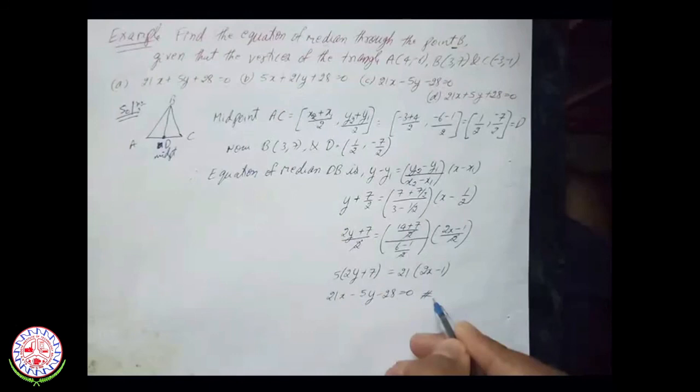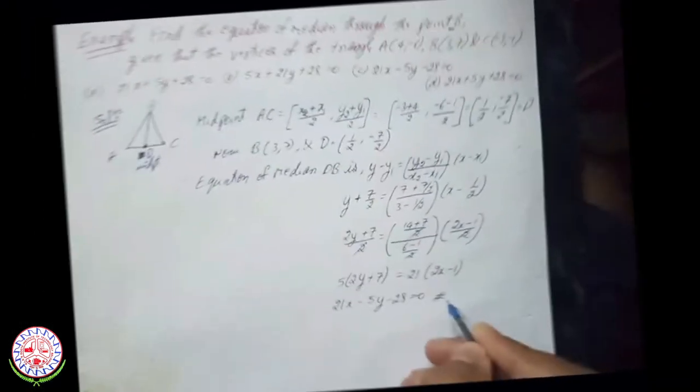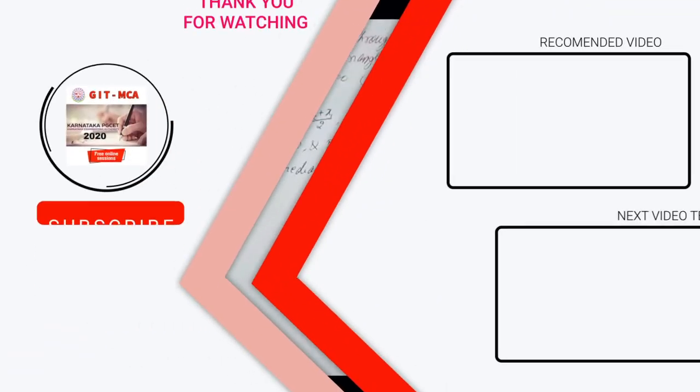In this example we found the median through point B. In the exam they may also ask for the median through point A or point C — just substitute and change the points to get the answer. All the best for your examination, thank you.